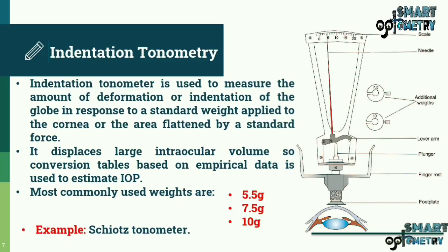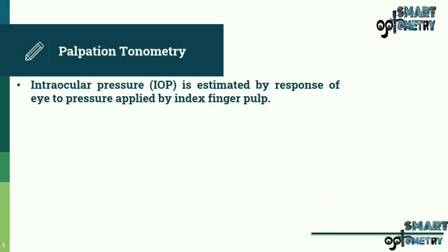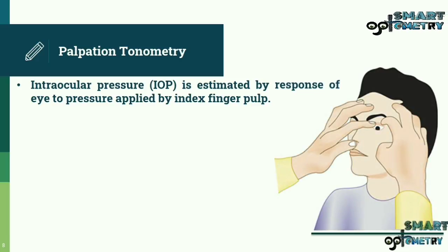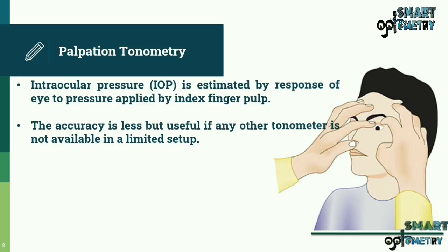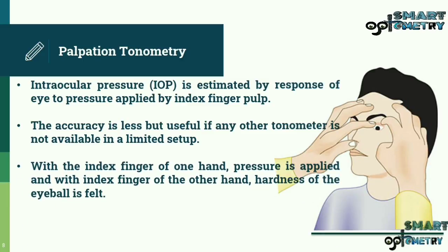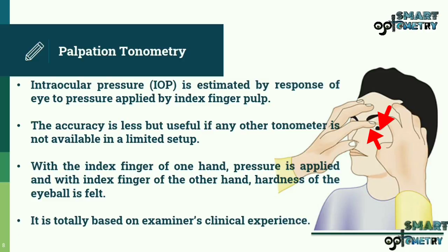Palpation Tonometry: Intraocular pressure is estimated by the response of the eye to pressure applied by the index finger pulp. The accuracy is less, but it is useful when no other tonometer is available in a limited setup. Pressure is applied with the index finger of one hand, and the hardness of the eyeball is felt with the index finger of the other hand. It is totally based on the examiner's clinical experience.